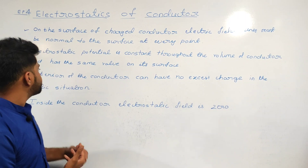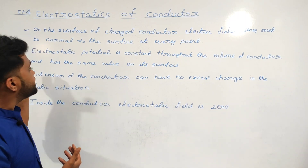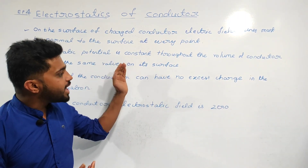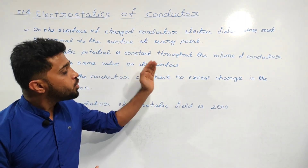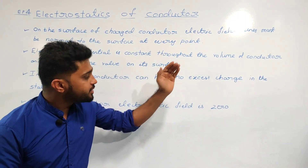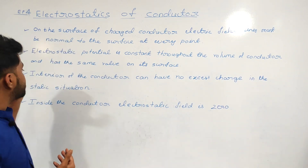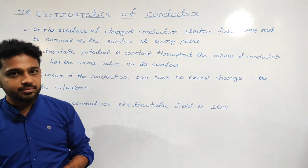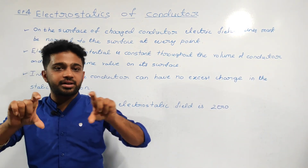Next point: the interior of a conductor can have no excess charge in the static situation. In a static situation, any excess charge resides on the surface of the conductor.